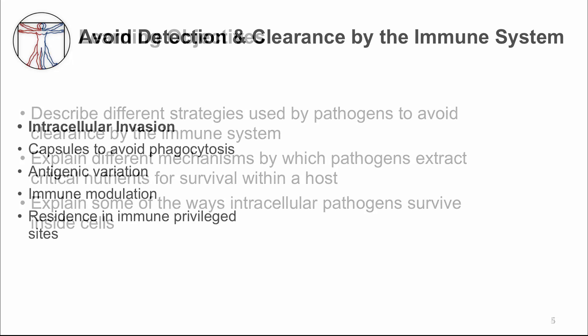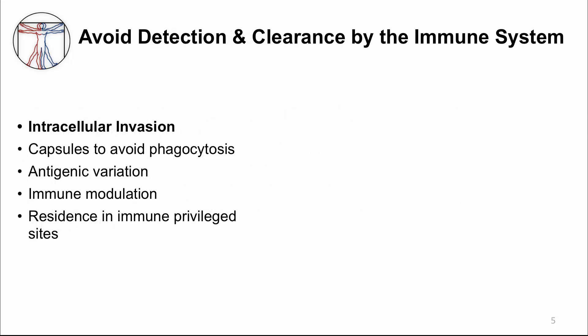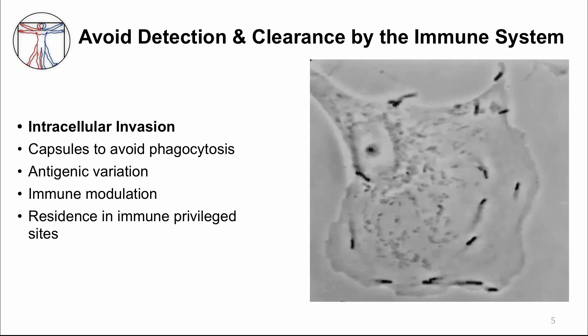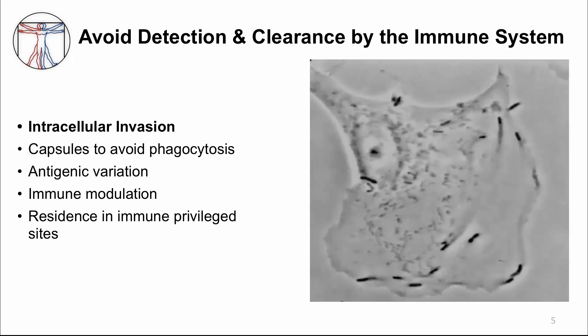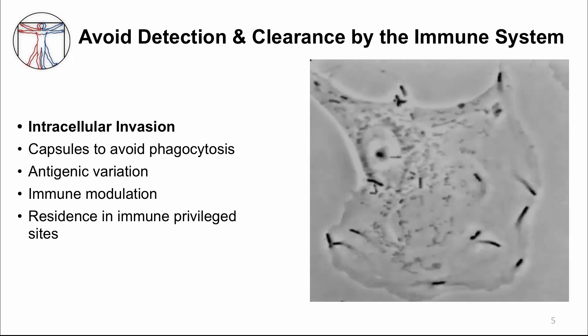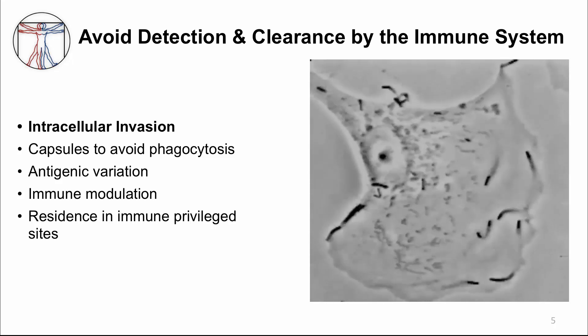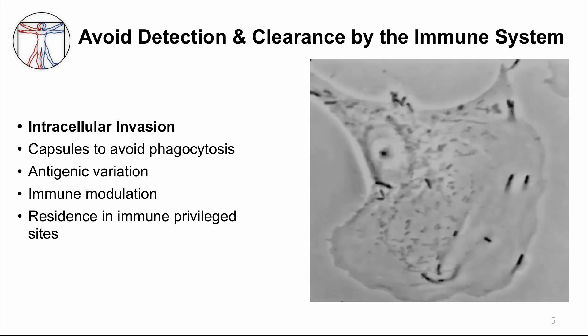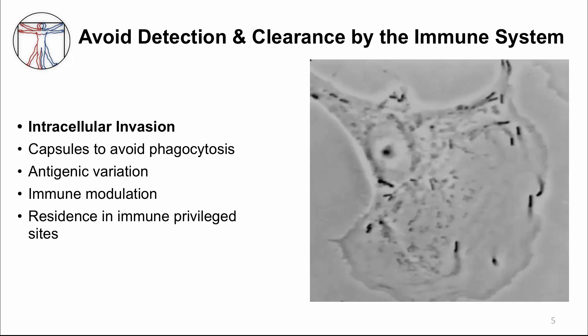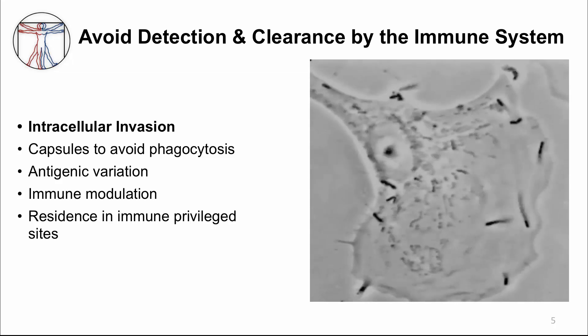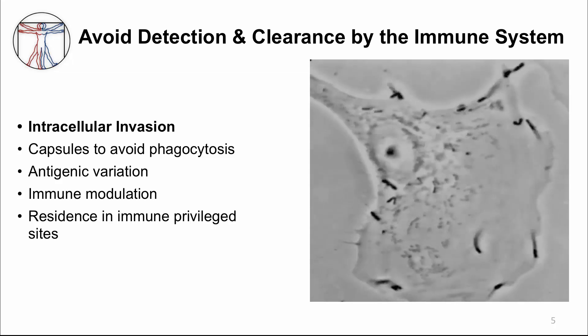Many microbes avoid clearance by the immune system by invading into a cell. This is true of all viruses, but there are also bacteria and parasites that will actively invade a cell to persist in an intracellular niche. For example, in this movie you can see a bacterium called Listeria monocytogenes, which invaded this epithelial cell and is now hiding and replicating safely in the cytosol. By hiding inside the cell, Listeria can't be cleared by antibody immune responses.